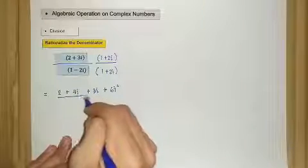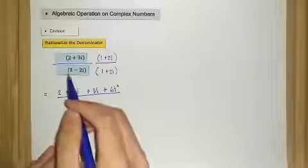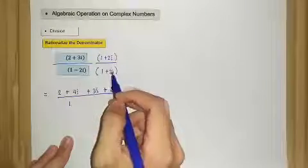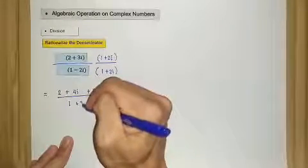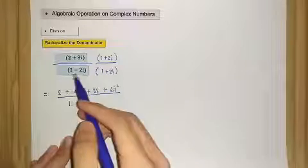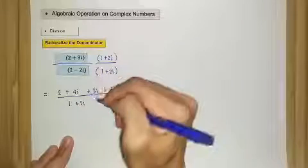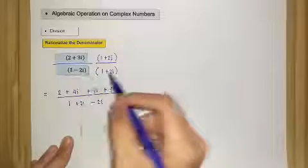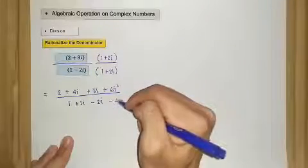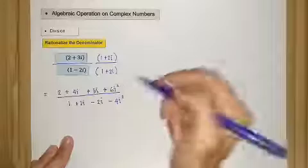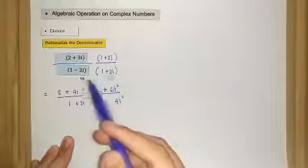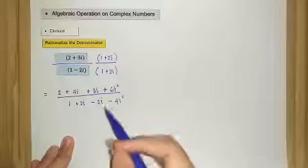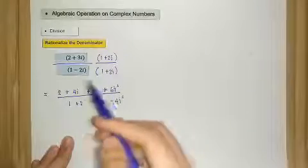For the denominator: 1 times 1 is 1, 1 times 2i is plus 2i, negative 2i times 1 is negative 2i, and negative 2i times positive 2i is negative 4i squared.